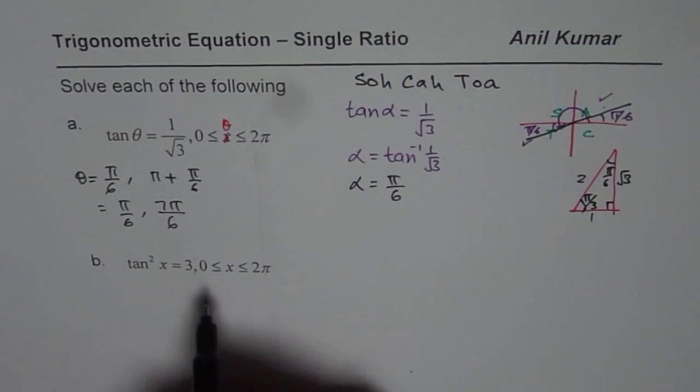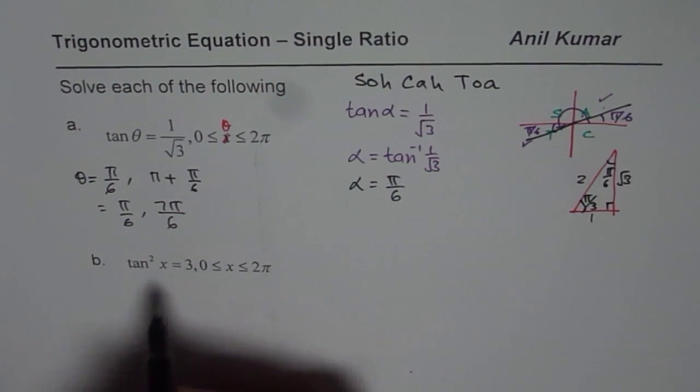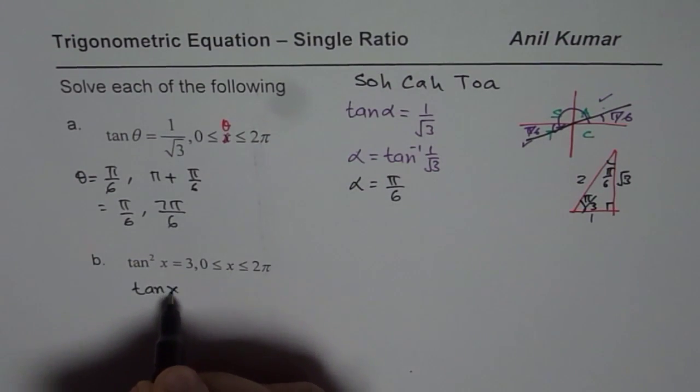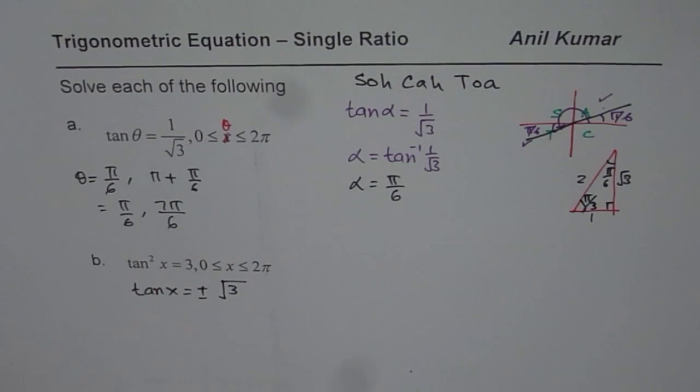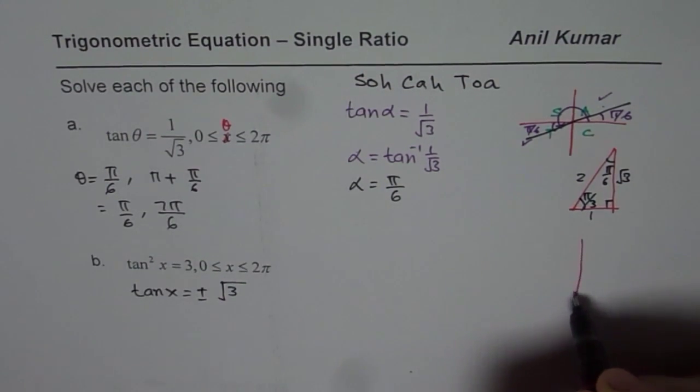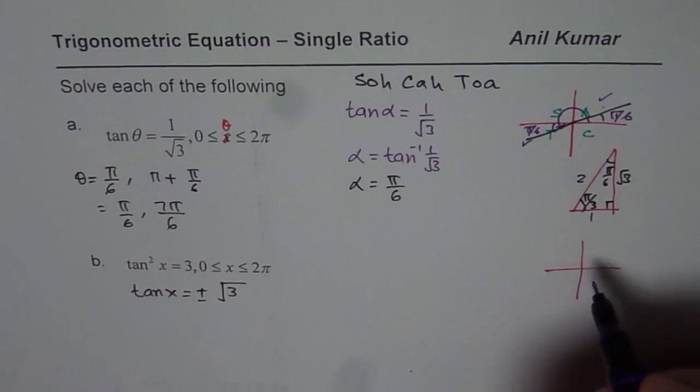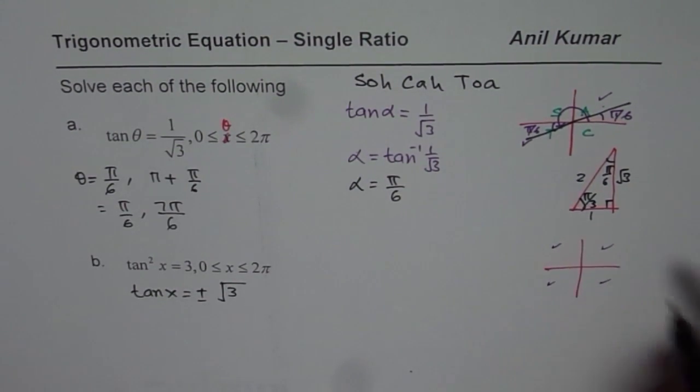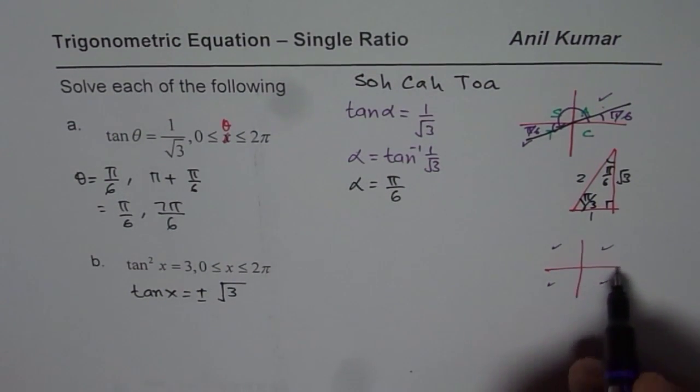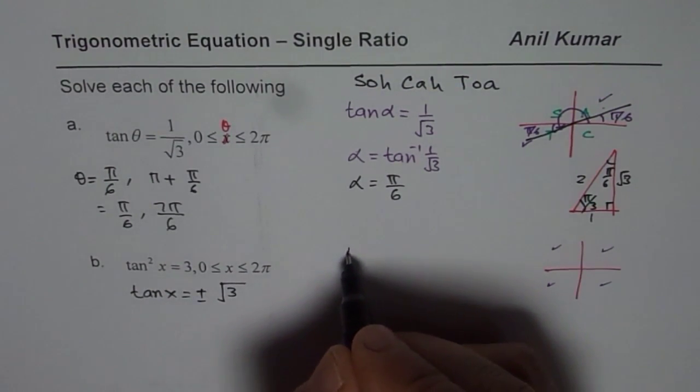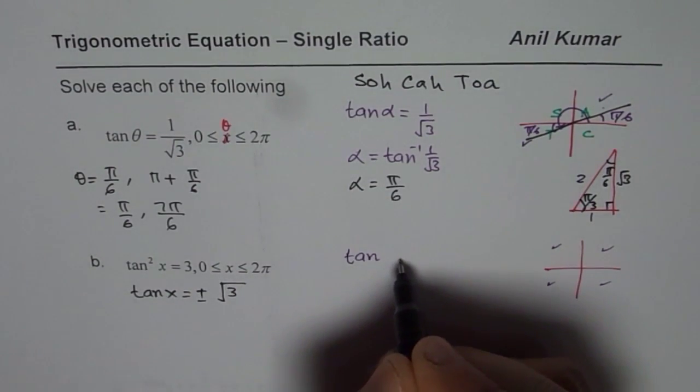Now let's do the next one. Tan square x equals 3, that means tan x is square root of 3 with positive and negative sign, both signs. Both signs means you are looking for solutions in all four coordinates. Step number 1 is just figuring out how many solutions are possible, one in each quadrant.